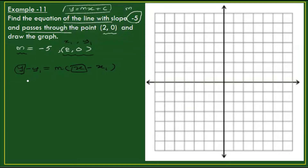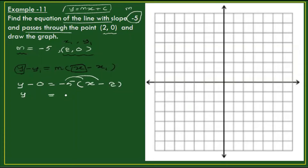Applying the point-slope formula with x1 equals 2, y1 equals 0, and m equals minus 5: y minus 0 equals minus 5 times x minus 2.